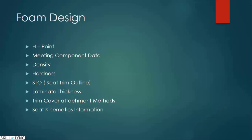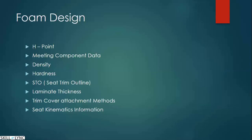With proper surfacing, you need to check that there is no concave-to-convex transition happening in the seat. To design a foam, you require an edge point — how the person is going to sit. The meeting component data for the foam will be the seat structure, the metal structure, and the plastic interface surfaces. How the components fit together using metal and plastic determines how we design the foam.